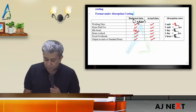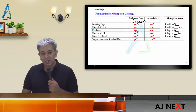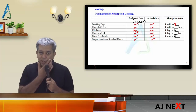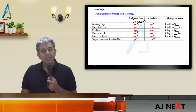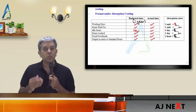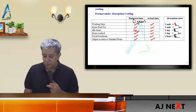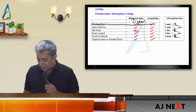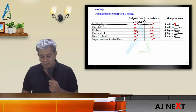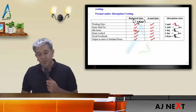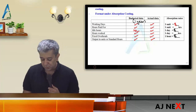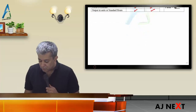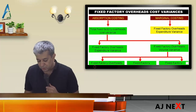If idle hours data is not given, assume it is zero — your job becomes easier. If days data is not given, then you won't need to calculate the day-related rates or variances. Now let's see which variances come under absorption costing. I have made a chart covering both absorption costing and marginal costing. Under absorption costing: fixed factory overhead cost variance breaks into two parts — fixed overheads expenditure variance, and fixed factory overhead volume variance.